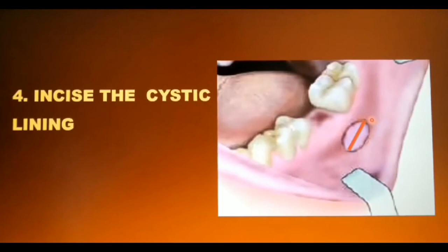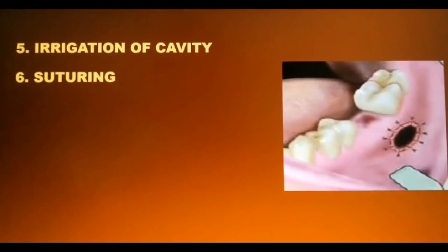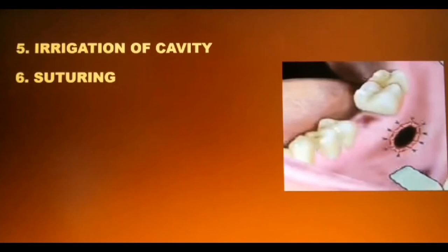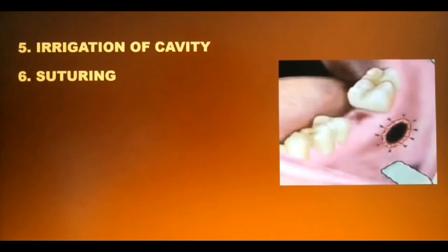After the cystic contents have been evacuated, the cavity is flushed gently with saline and betadine. Keep in mind that only the cystic contents — fluid, semi-fluid, or gas — are evacuated. The cystic lining will still remain. After thorough irrigation of the cavity, the next step is suturing.